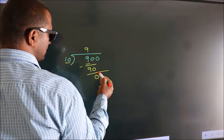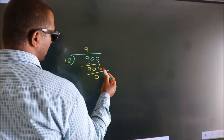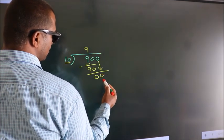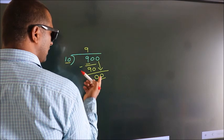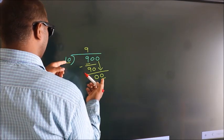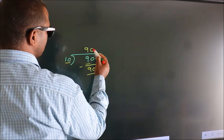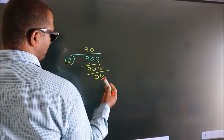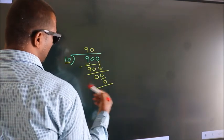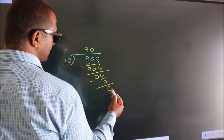After this, bring down the beside number. So bring 0 down — we have 0. When do we get 0 in the 10 table? 10 times 0 is 0. Now we subtract. We get 0.